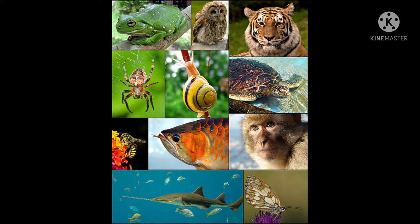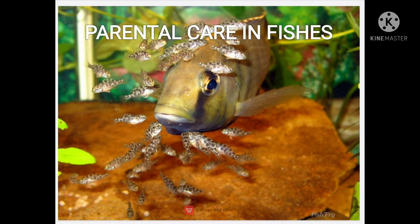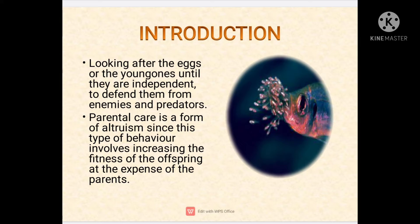Before beginning the main topic, let me tell you what is parental care. Parental care is a kind of care shown by the parents to their young ones until they are independent enough to protect themselves from any predator or enemy. You can also say parental care is a kind of altruism behavior, because in altruism behavior one individual sacrifices its life to protect the life of another. The same thing happens in the parent-young one relationship — parents can sacrifice their life to protect their young ones from any kind of danger. So parental care is an example of altruism behavior.